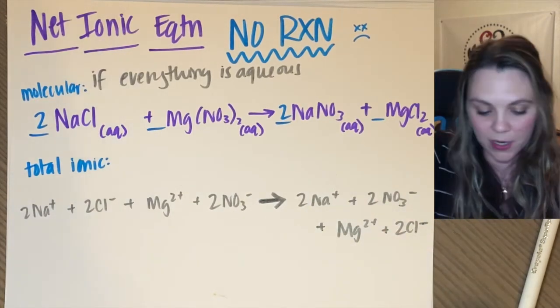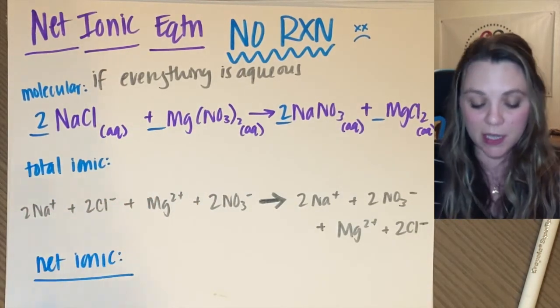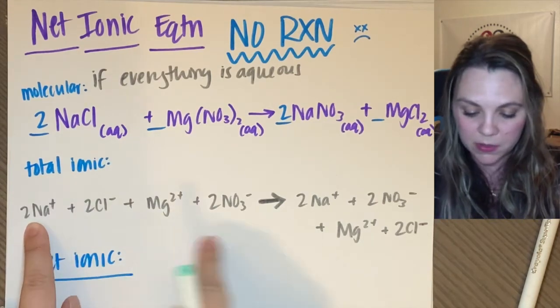So if I'm then going to try and find my net ionic, I need to cancel out my spectator ions. Well, everything's a spectator ion. I have two sodiums here, two sodiums here.